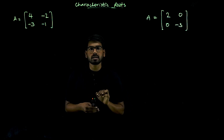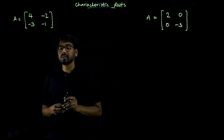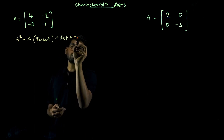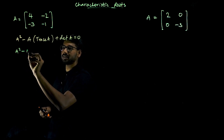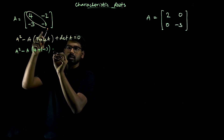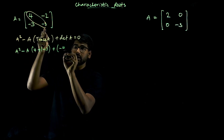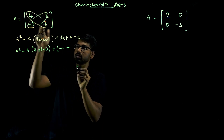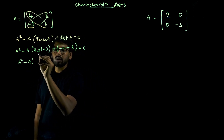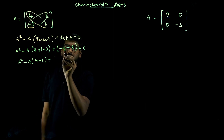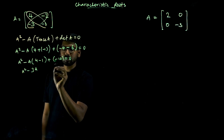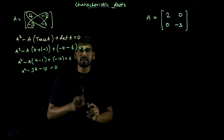Another question asks to find characteristic roots. First find the characteristic equation: lambda squared minus lambda times trace of A plus determinant of A equals zero. Trace of A is 4 plus minus 1. Determinant of A is 4 times minus 1, that is minus 4, minus minus 3 times minus 2, which is minus 6. So lambda squared minus lambda: 4 minus 1 is 3; and minus 4 minus 6 is minus 10 equals zero. Therefore lambda squared minus 3 lambda minus 10 equals zero.